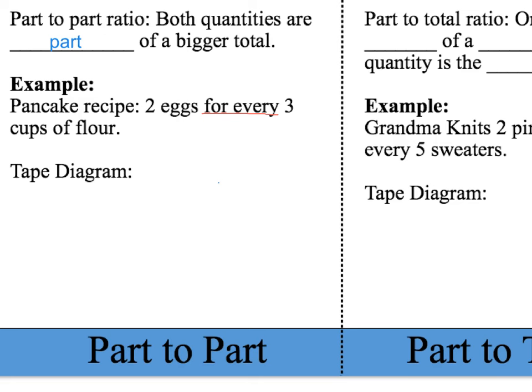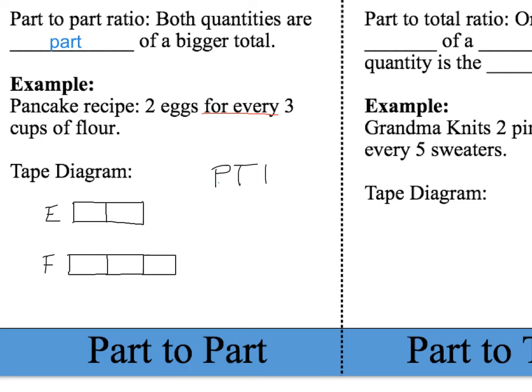We're going to create a tape diagram for this situation. For a part-to-part tape diagram, eggs is the first item and flour is the second. I'll draw two boxes for eggs — one for each egg. For flour, each box must be the same size, so I draw three equal boxes for the three cups of flour. So this tape diagram has two separate rows, one on top and one on bottom.